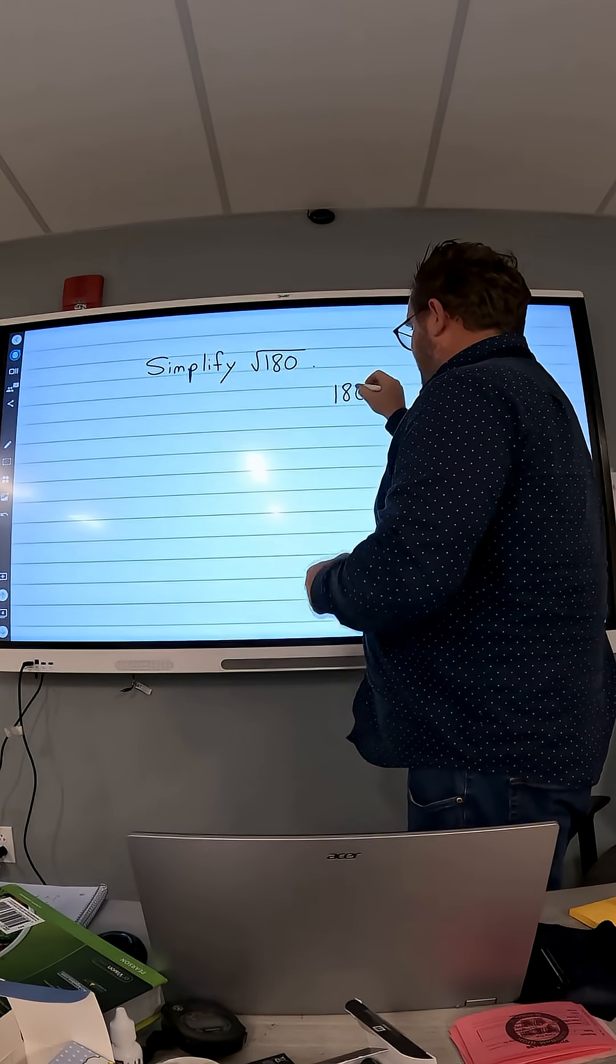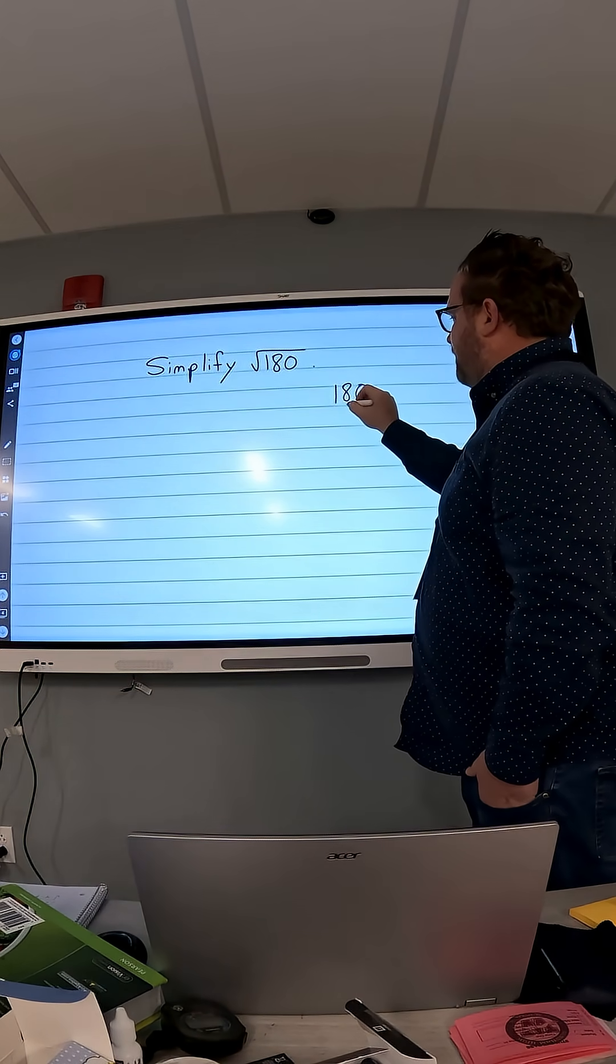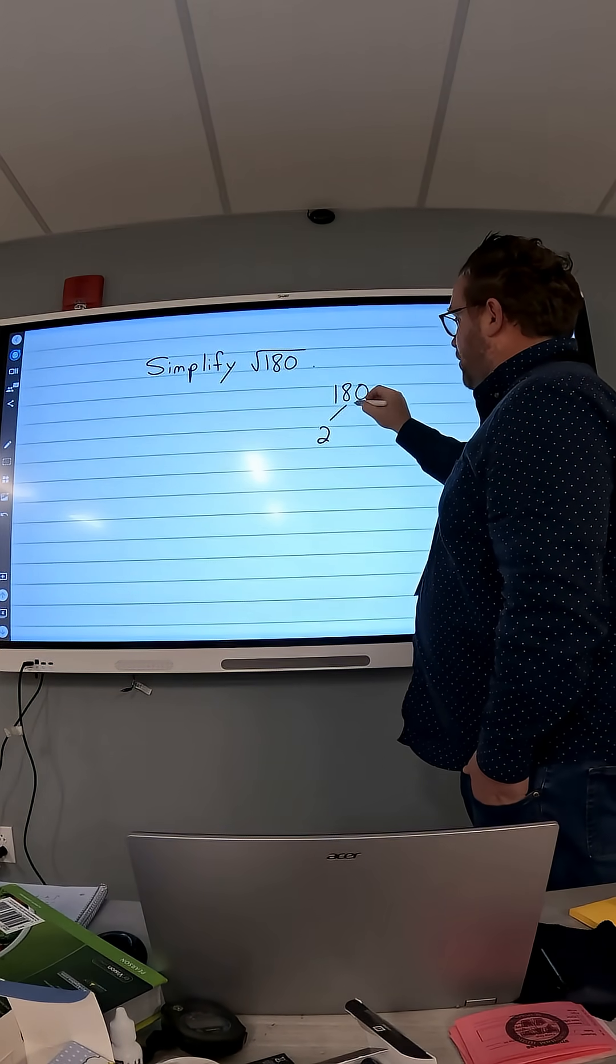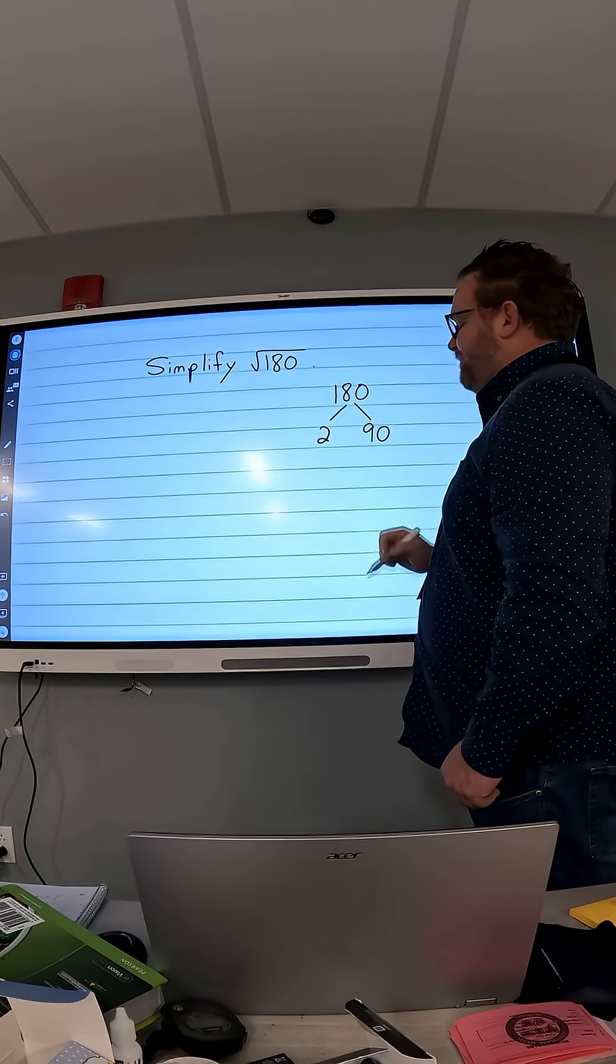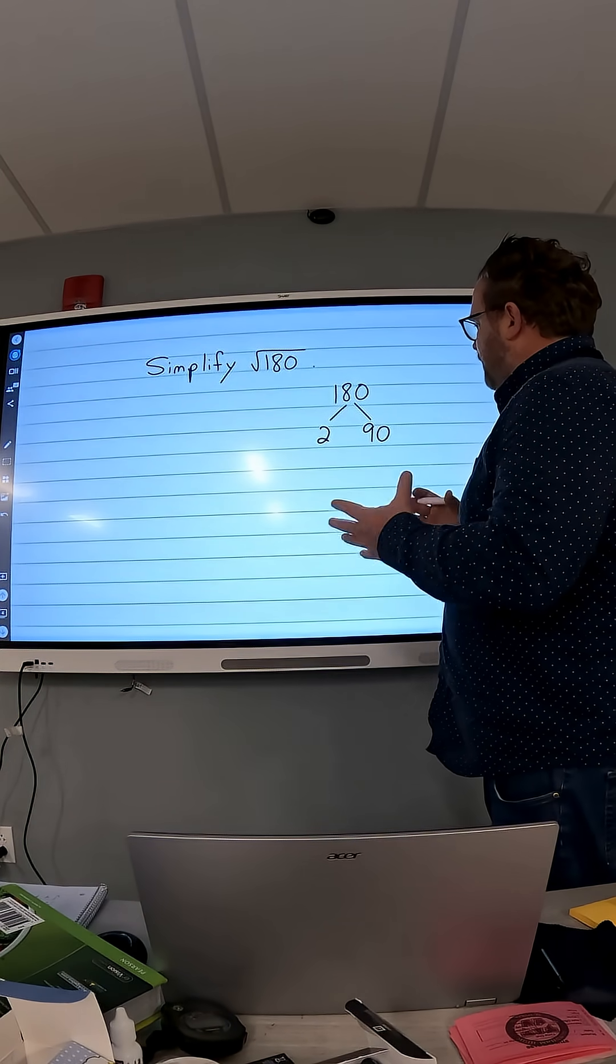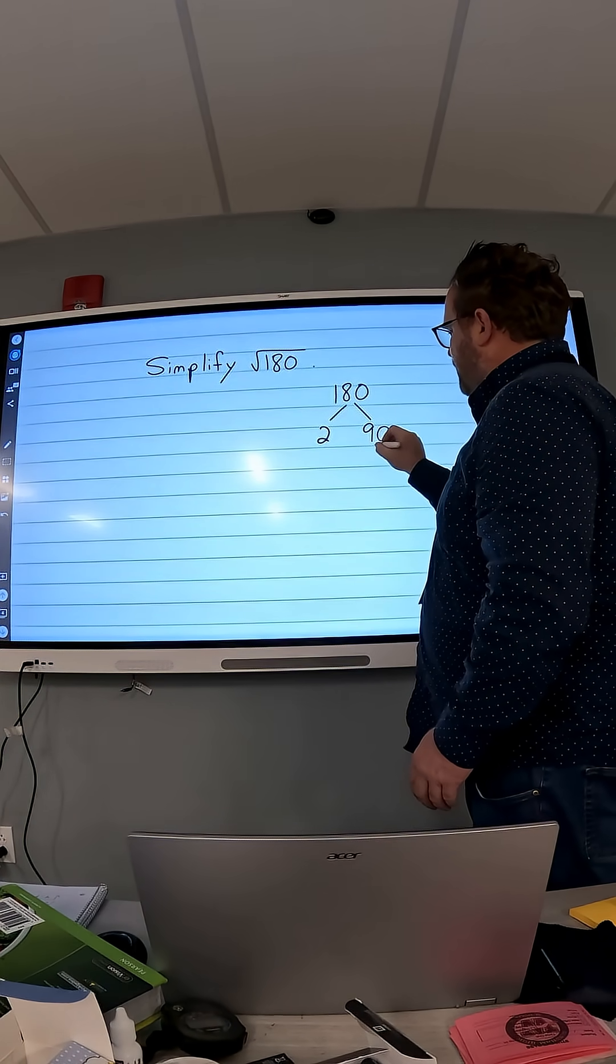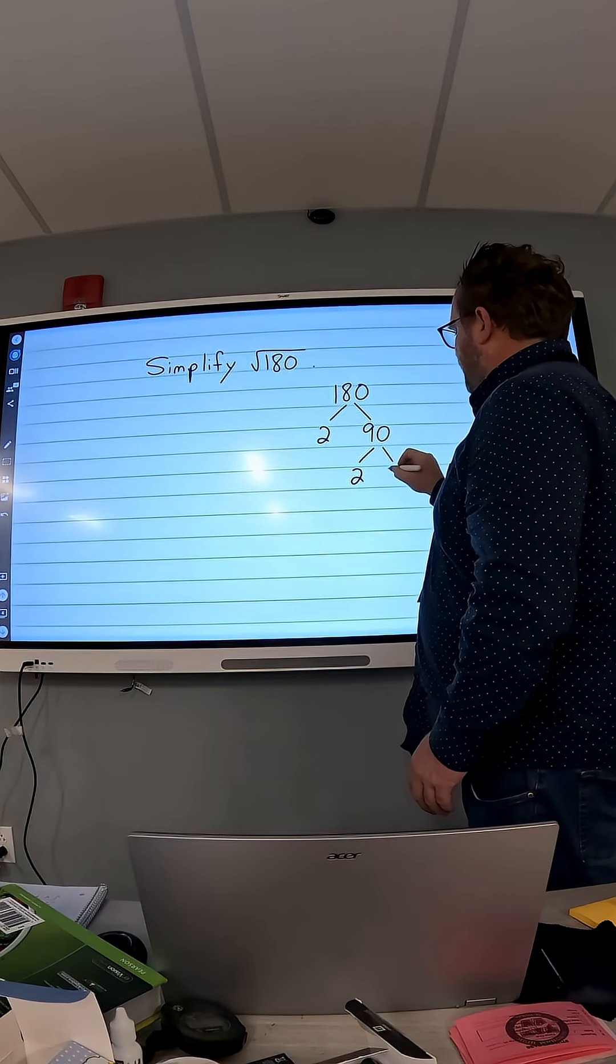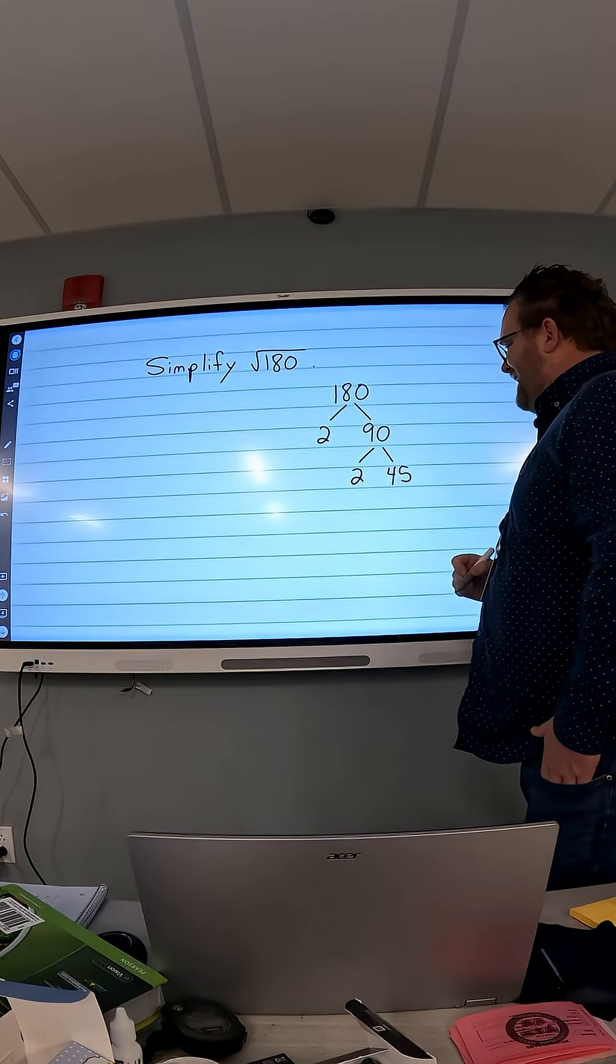So I note that 180 is even, so it's divisible by the prime number 2. So 2 times 90 equals 180. 90 is also even, so I can break that down, divide by 2. So I get 2 times 45 is 90.